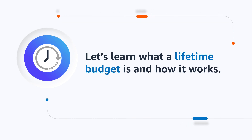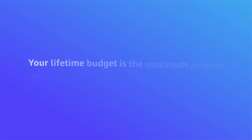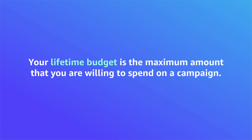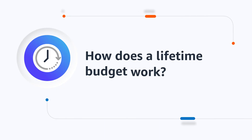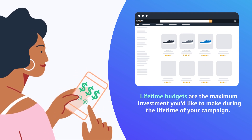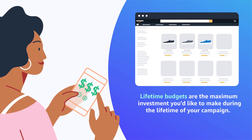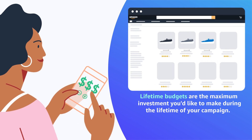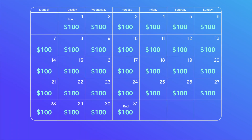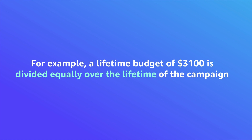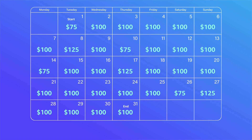Now let's learn what a lifetime budget is and how it works. Your lifetime budget is the maximum amount that you are willing to spend on a campaign. Unlike daily budgets, lifetime budgets take a step back and look at the maximum investment you'd like to make during the lifetime of your campaign. If you set an end date for your campaign, then your lifetime budget will be divided by the number of days in your campaign. You may spend more or less than this in a given day, but the total spend over the course of the campaign will never exceed the lifetime budget. If you do not set an end date, the campaign will run until the lifetime budget is reached.